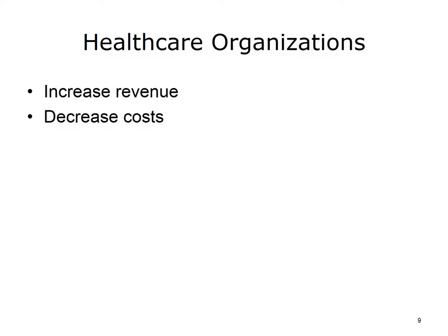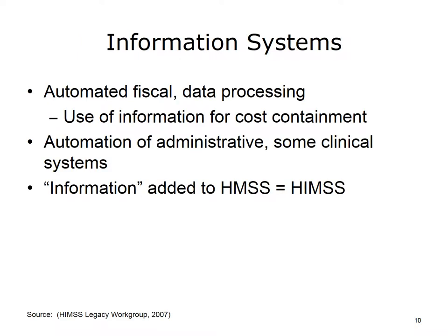Healthcare organizations continued to work on increasing their revenues, but now had to also work on decreasing costs. Computers still had a fiscal focus — billing and collections were dominant — but now information was being used to support cost containment. The automation of ancillary clinical information systems, mainly pharmacy, lab, and radiology, became more common. One of today's major healthcare IT organizations, HIMSS, was originally founded by industrial engineers whose focus was to improve the efficiency of healthcare. It was during the 80s that the word 'information' was added, transforming the Healthcare Management Systems Society into the Healthcare Information and Management Systems Society.